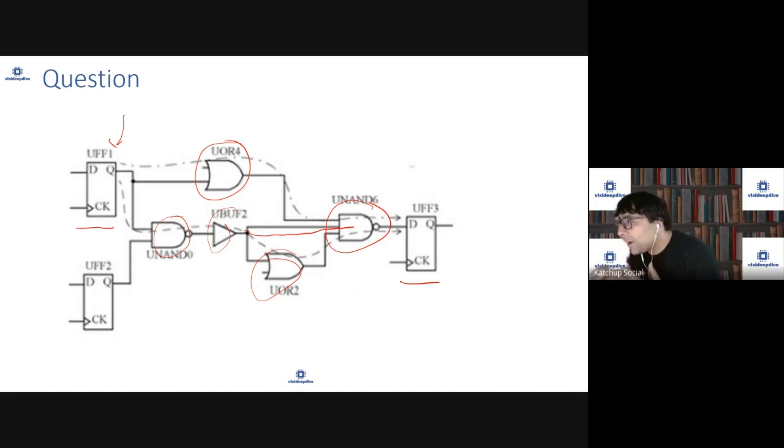To tell someone this is the path I'm talking about, the terminology which is used is you will have flop name, this UFF1. So your path is, I'm not going at pin level detail, there's one more advancement to this, but at a basic level to explain, my path is coming from UFF1, then it is going to this OR gate UOR4 that is the name of this.